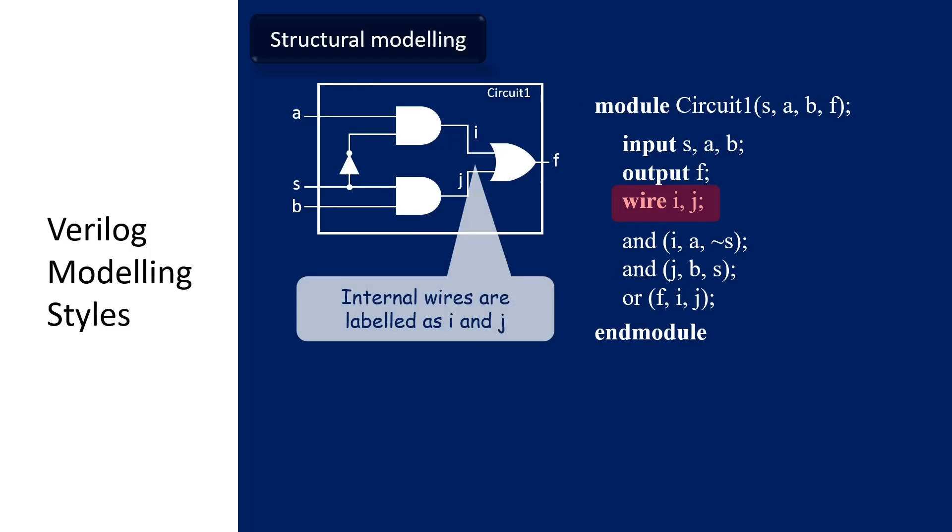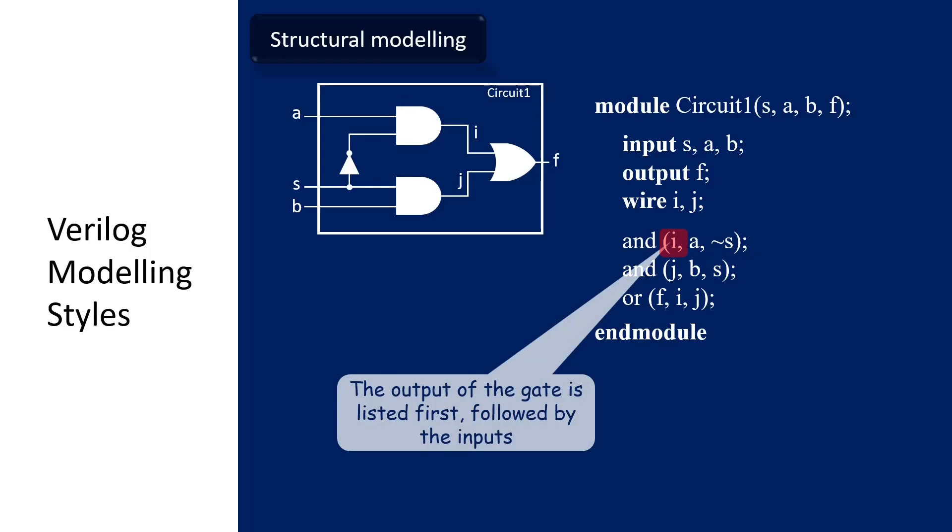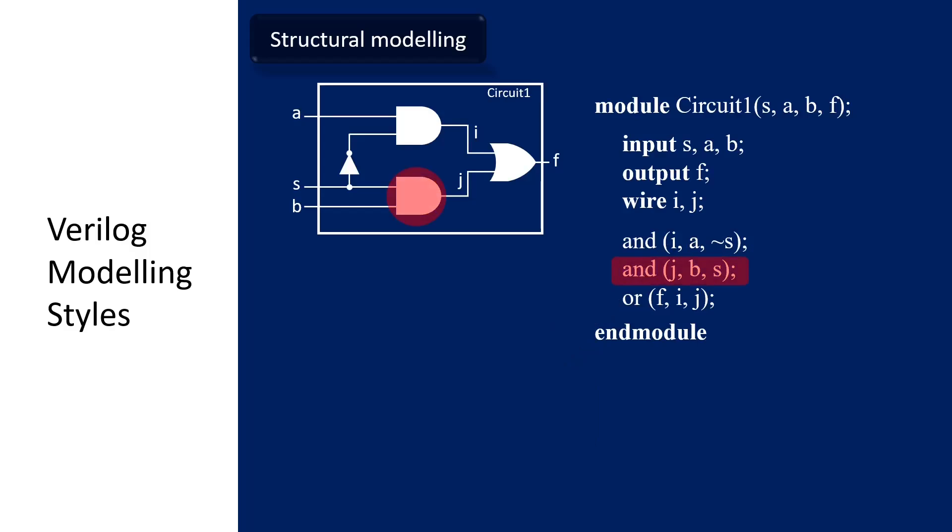In this example, we can describe the circuit like this. Where we need to describe the internal wires. This and gate can be described like this. Where the and keyword is used to instantiate the and gate from the library and the connections are described in the bracket. The output of the gate must be listed first, followed by the input. Where we have A and not S as the inputs. Same as the second and gate. We have J as an output, B and S are the inputs. And also the or gate.